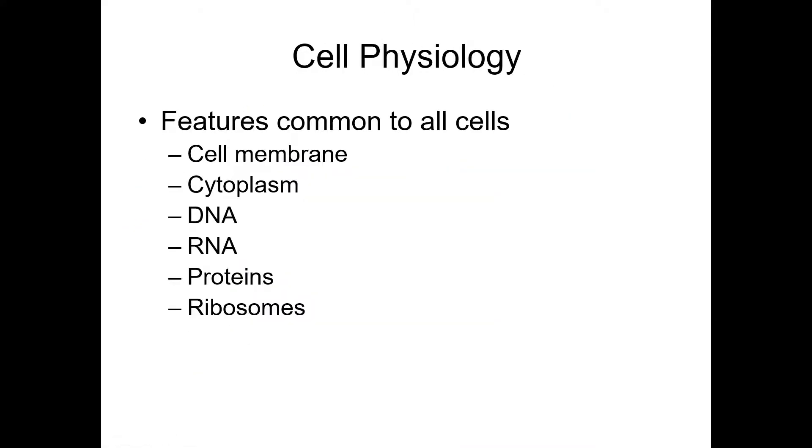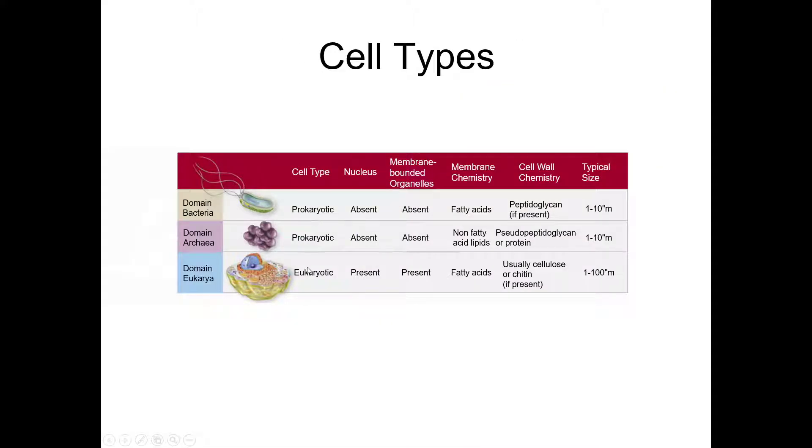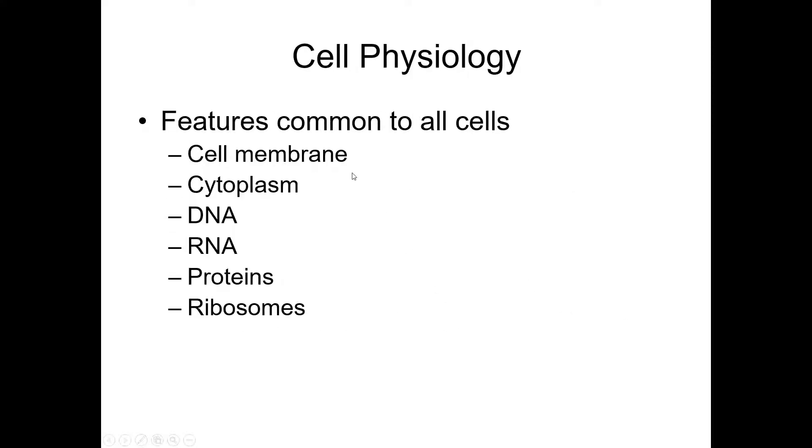Everyone will get a question on the common features to all cells. Now the way in which I describe this can actually vary, but sometimes I say which of the following is not a common characteristic to both prokaryotic and eukaryotic cells. If you remember, we talked about how prokaryotic and eukaryotic are the only two types of cells.